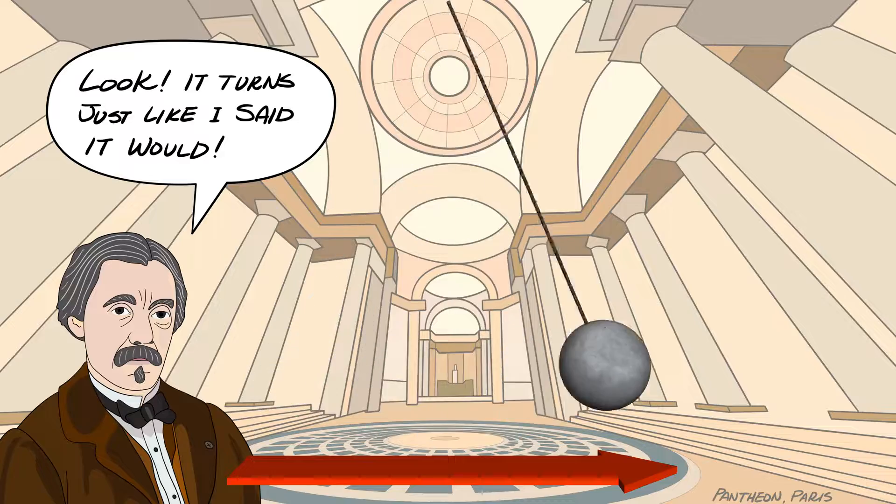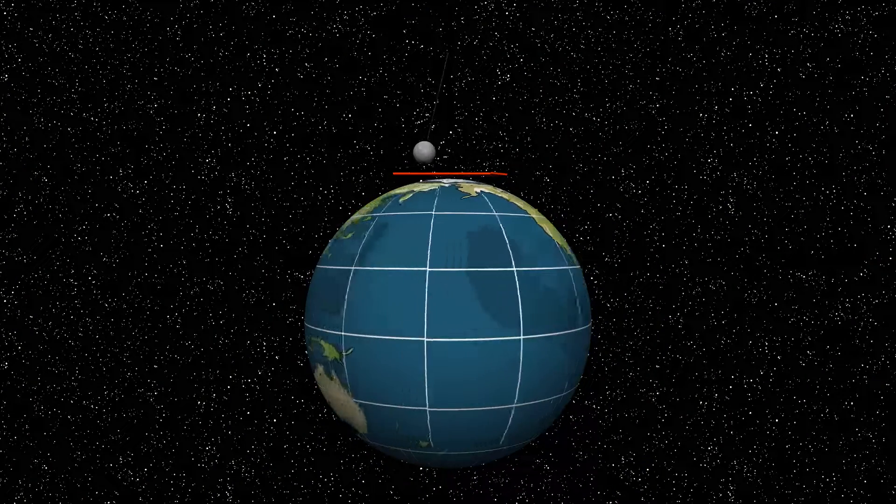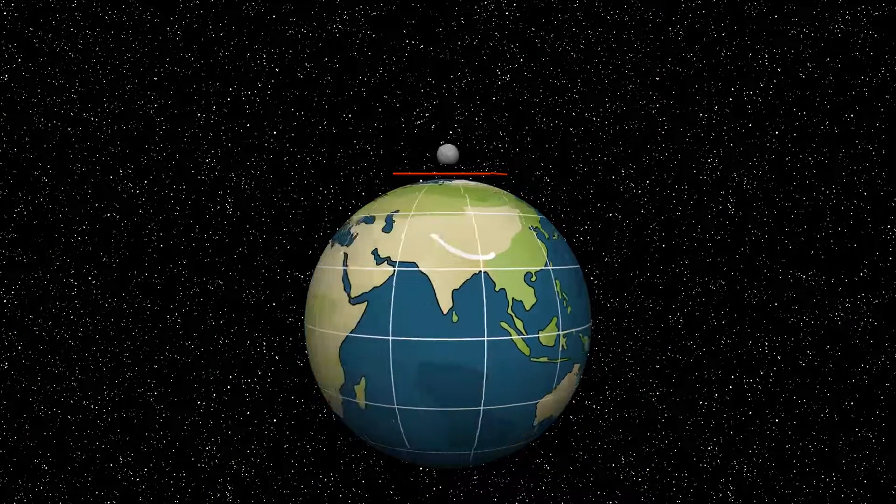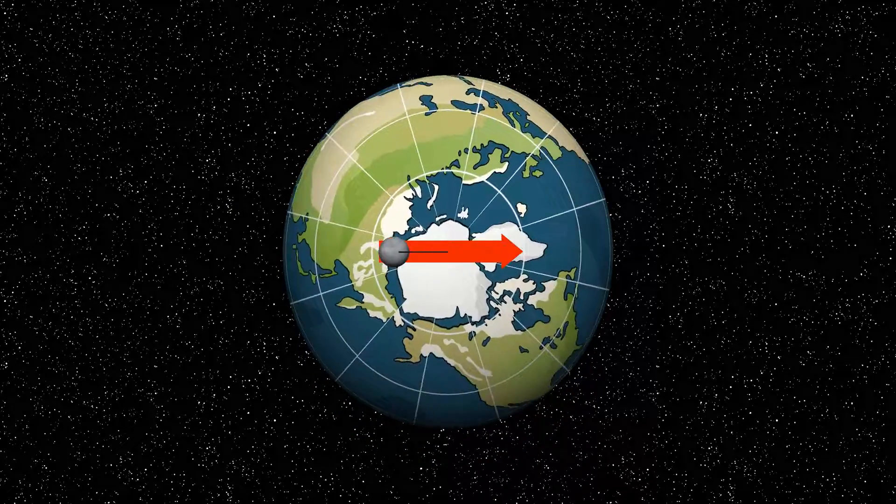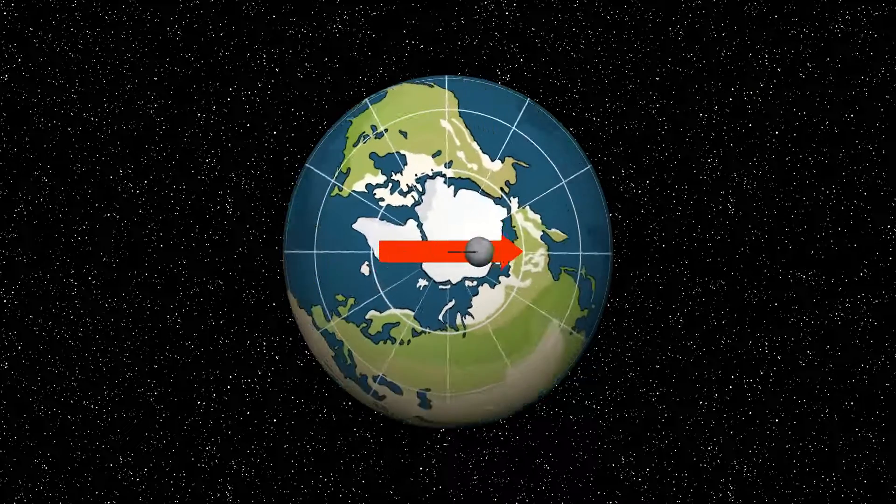Let's place the pendulum on top of the North Pole. Now imagine the ball bobbing back and forth while Earth beneath it spins counterclockwise. From this perspective, the pendulum is fixed while Earth rotates beneath it.